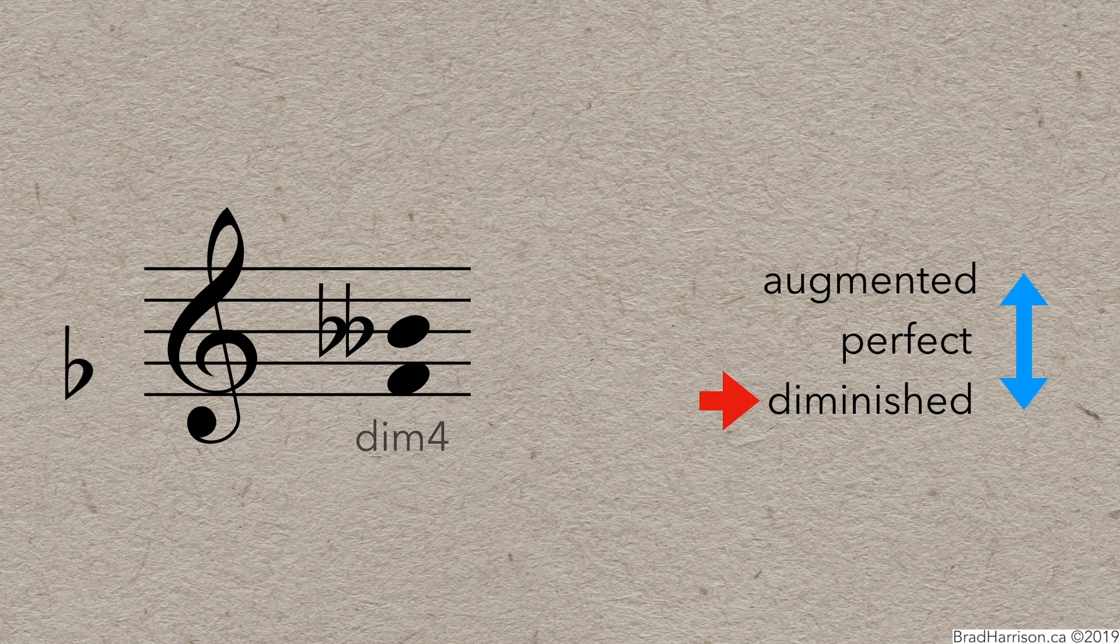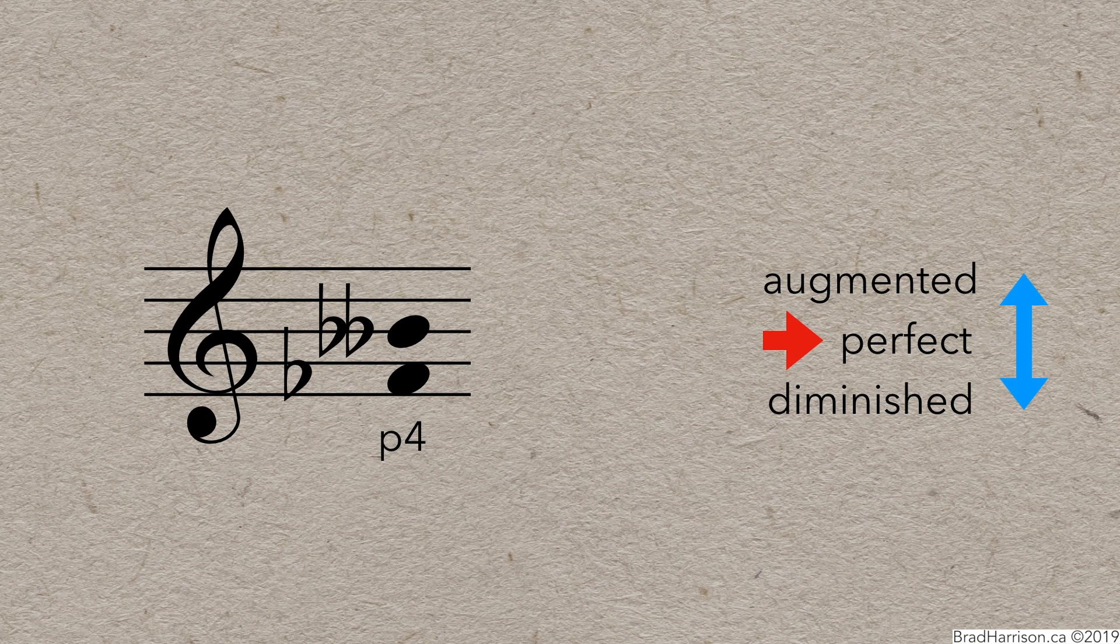Finally, add the flat back to the F, and the interval gets bigger by a semitone, so that's the perfect 4th again. F-flat to B-double-flat is a perfect 4th.